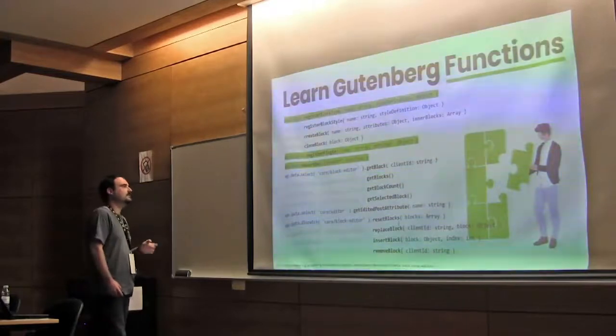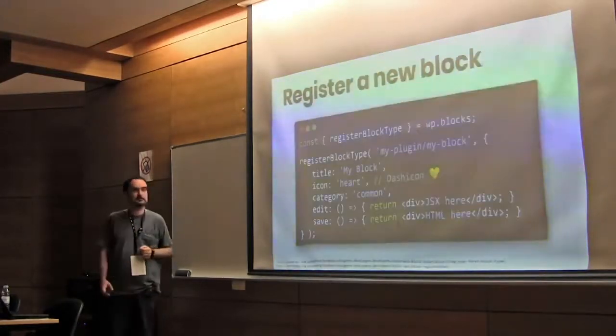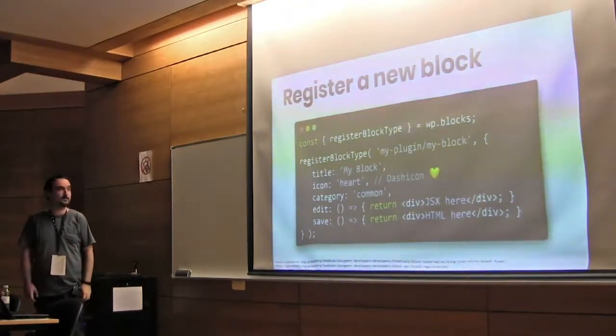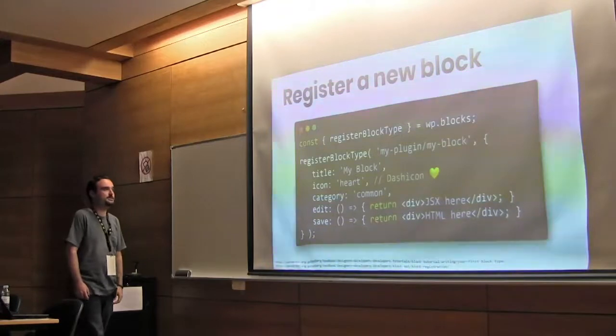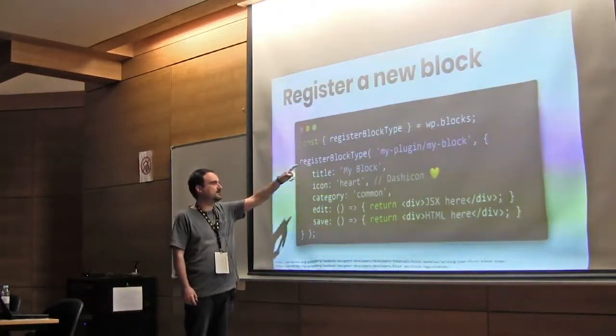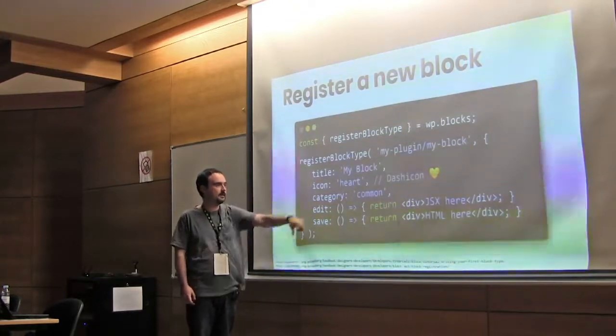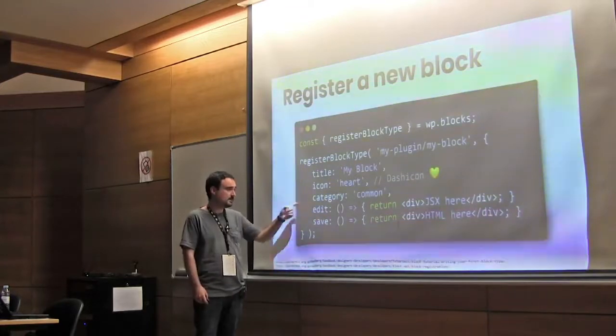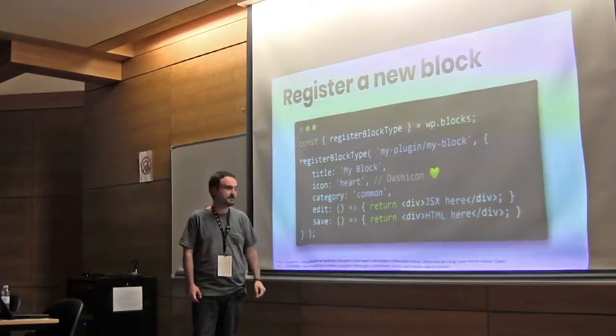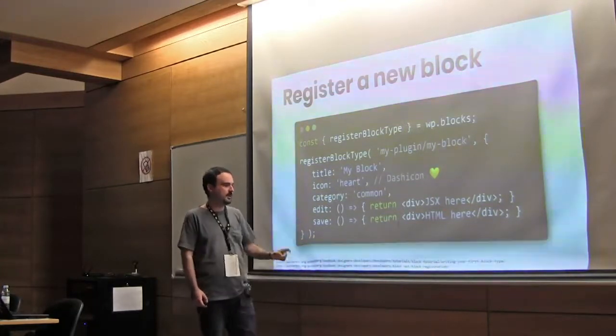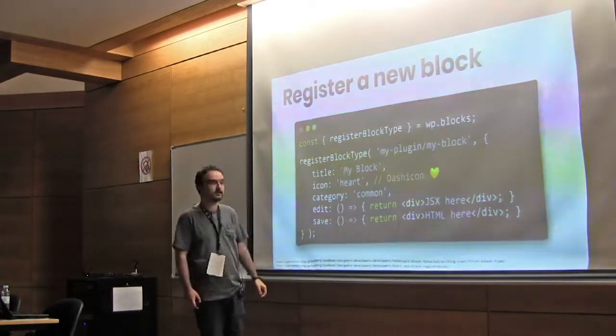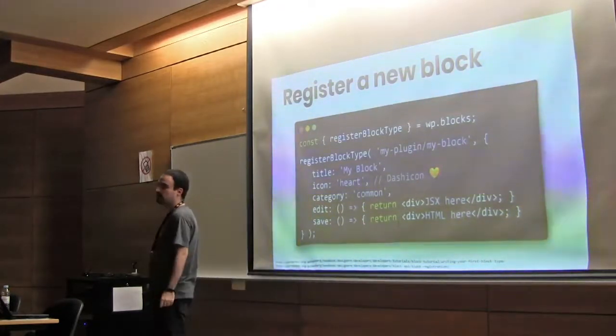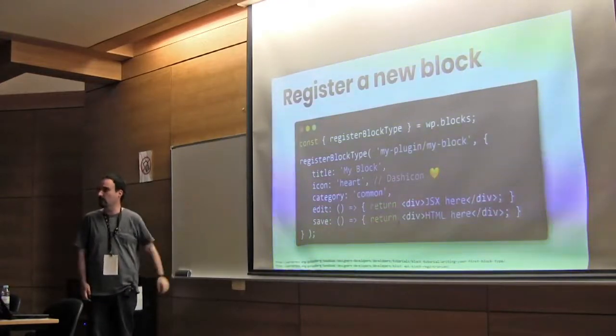But today, I only will deal with these three guys in detail. The first one is the most common one. It's registerBlockType, which allows you to register a new block, of course. So, it's pretty easy to understand. You only need to use the registerBlockType function. Pass as argument a name, and an object containing settings. These settings can be a title, an icon, which is a Dashicon. A category, and two important properties. Edit and save. Edit returns a component, and here is where you put the JSX that we showed before. And save is where you put the final HTML that will load in the frontend. So, pretty much, that's how blocks are created.